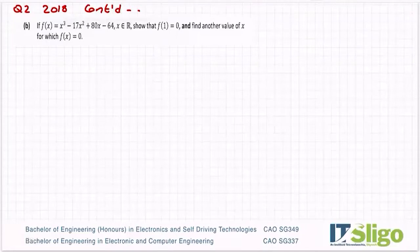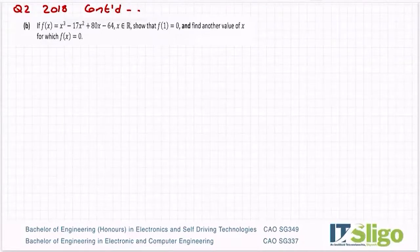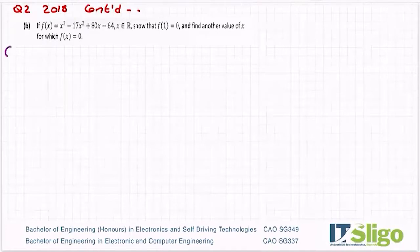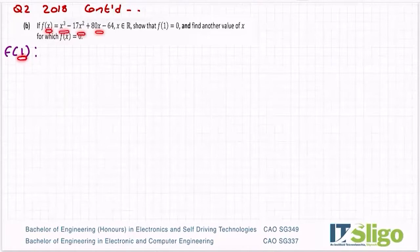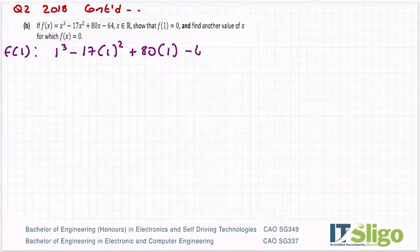The next part: if f(x) is equal to x cubed minus 17x squared plus 80x minus 64, show that f(1) is zero and find another value of x for which f(x) is equal to zero. We've done a few of these in algebra, so it's a great opportunity to revise. When you see f(1), x has been replaced by one, so replace everything with one: one cubed minus 17 times one squared plus 80 times one minus 64. Let's put that into the calculator — and it is indeed equal to zero.